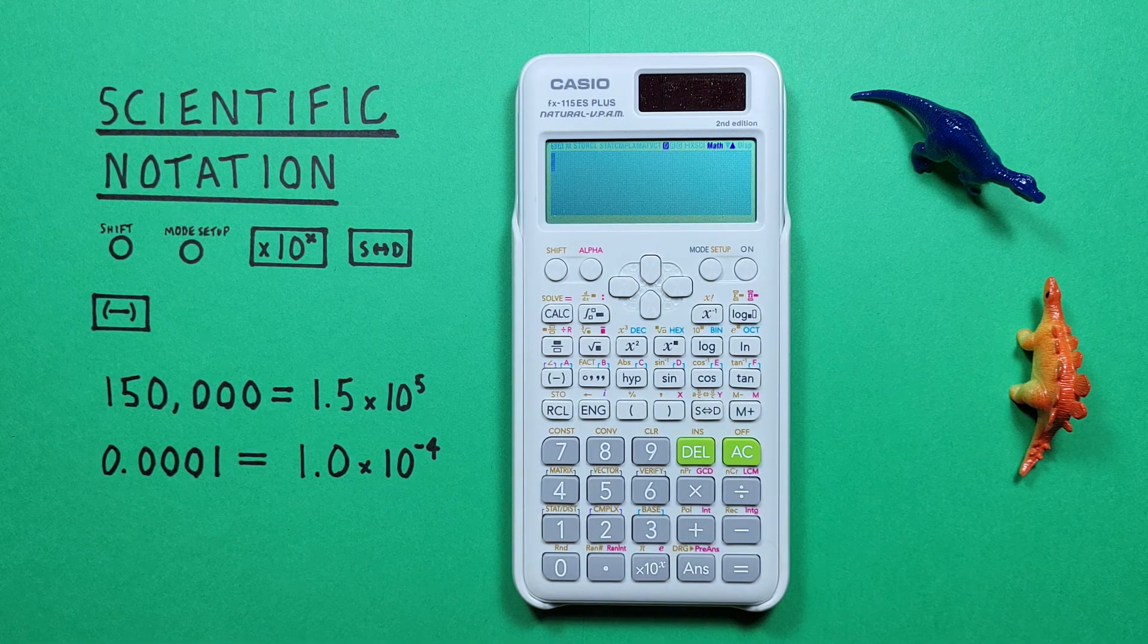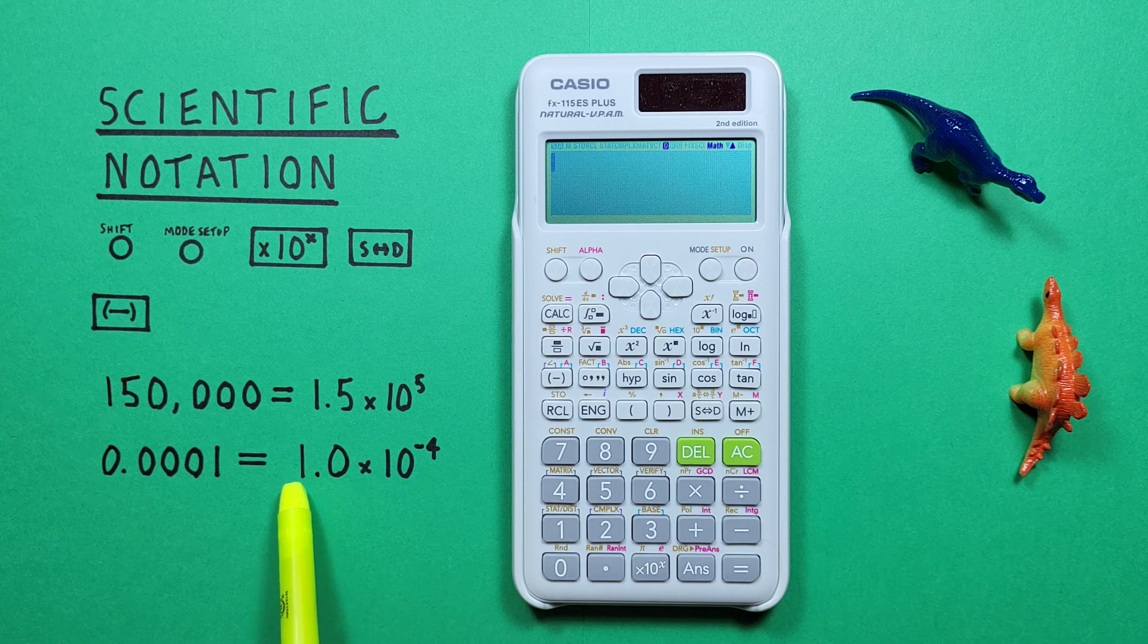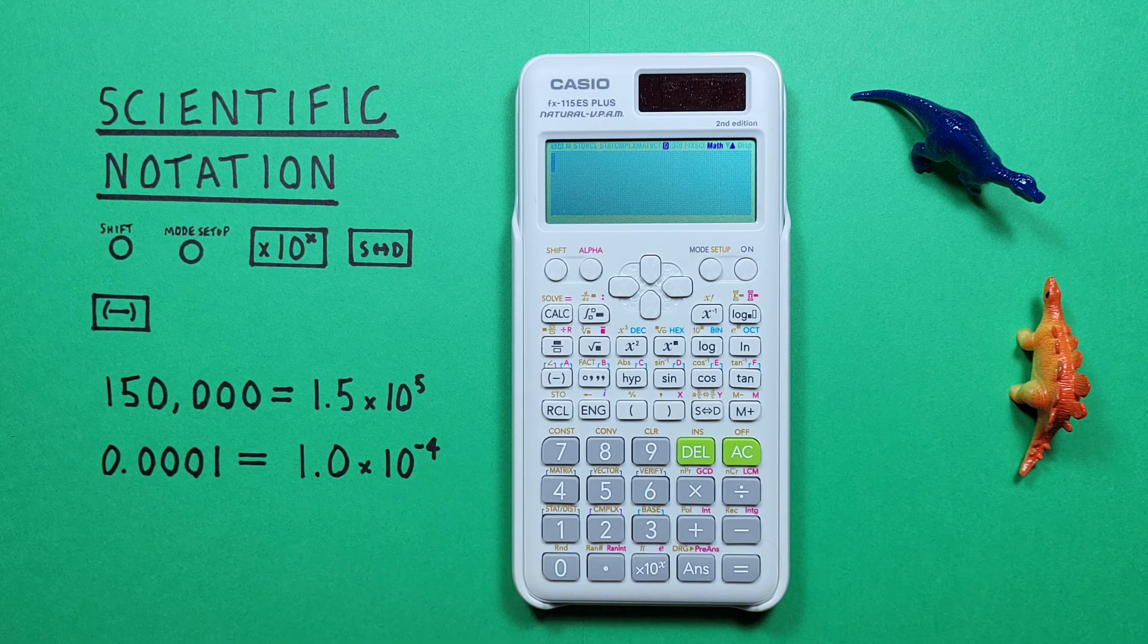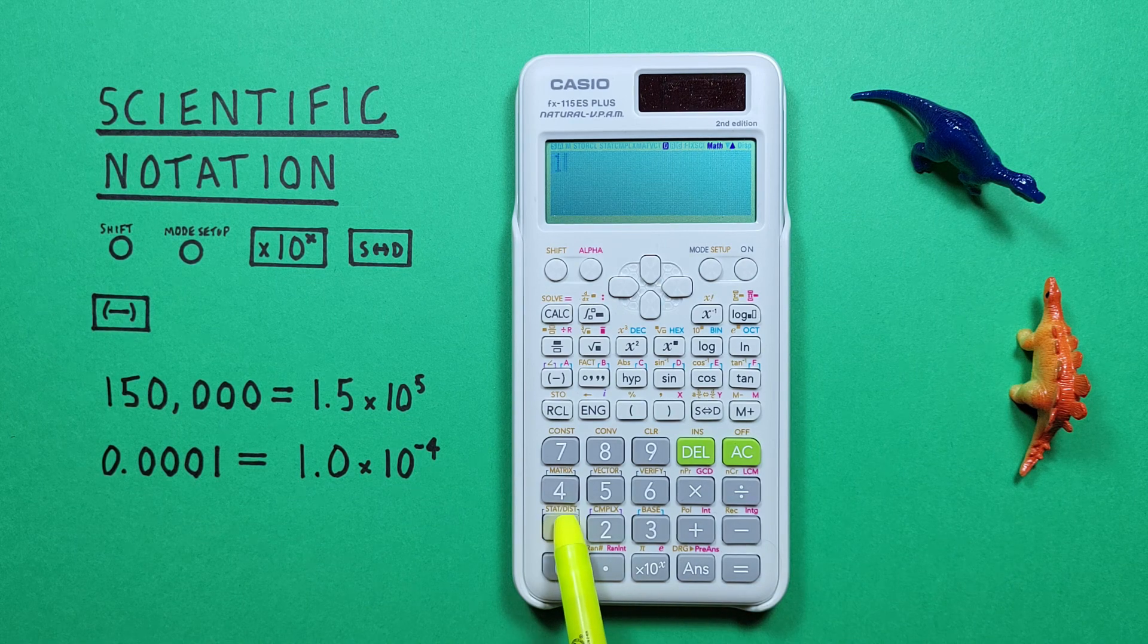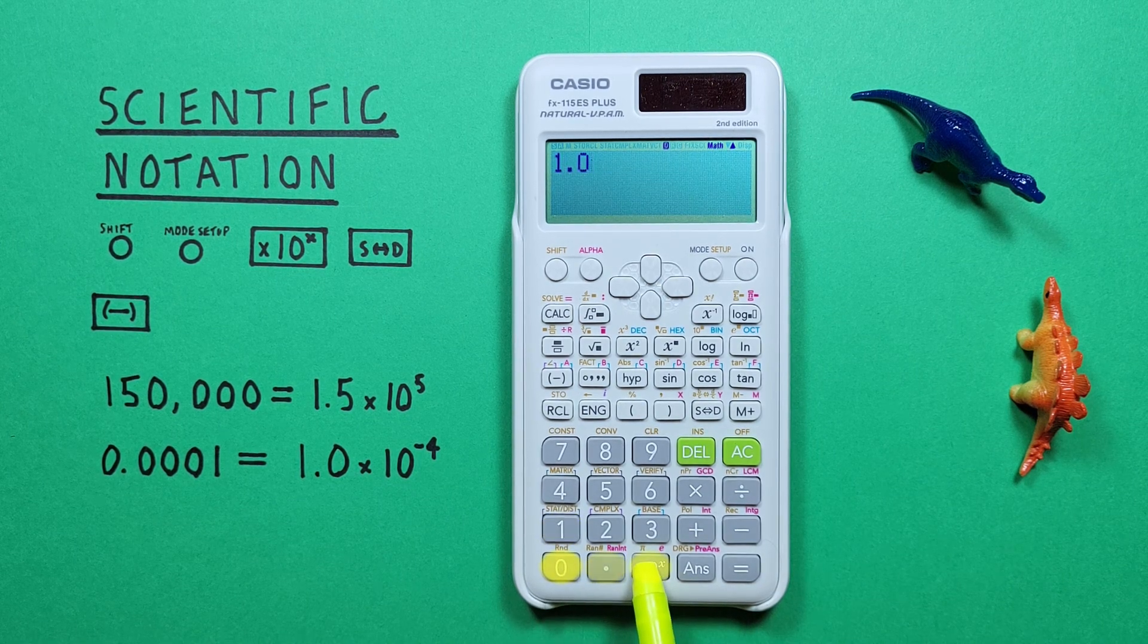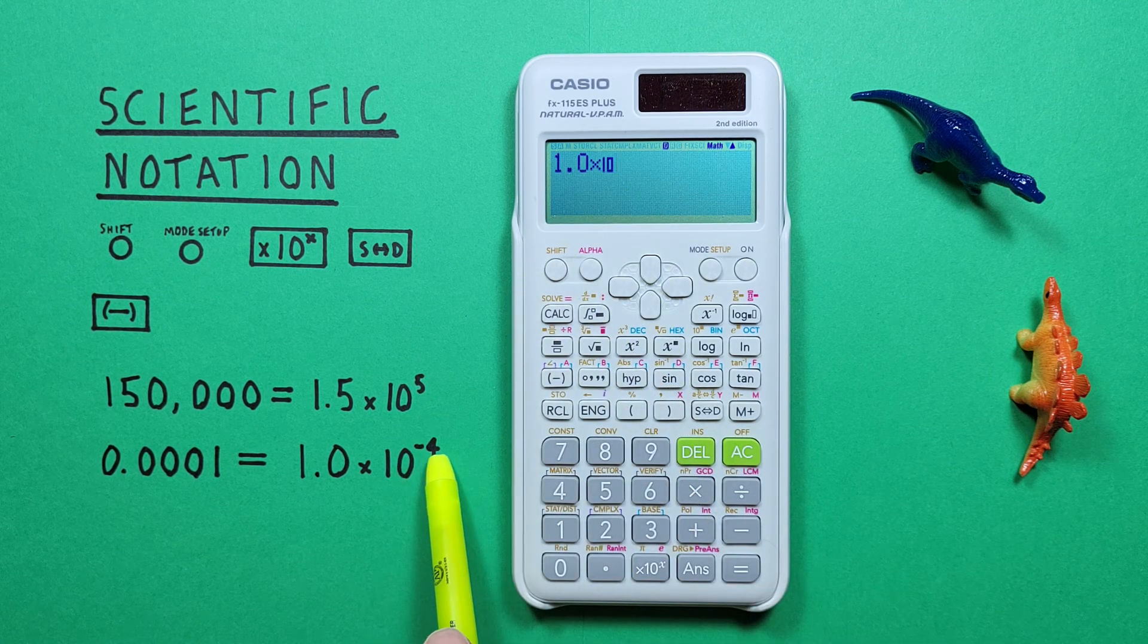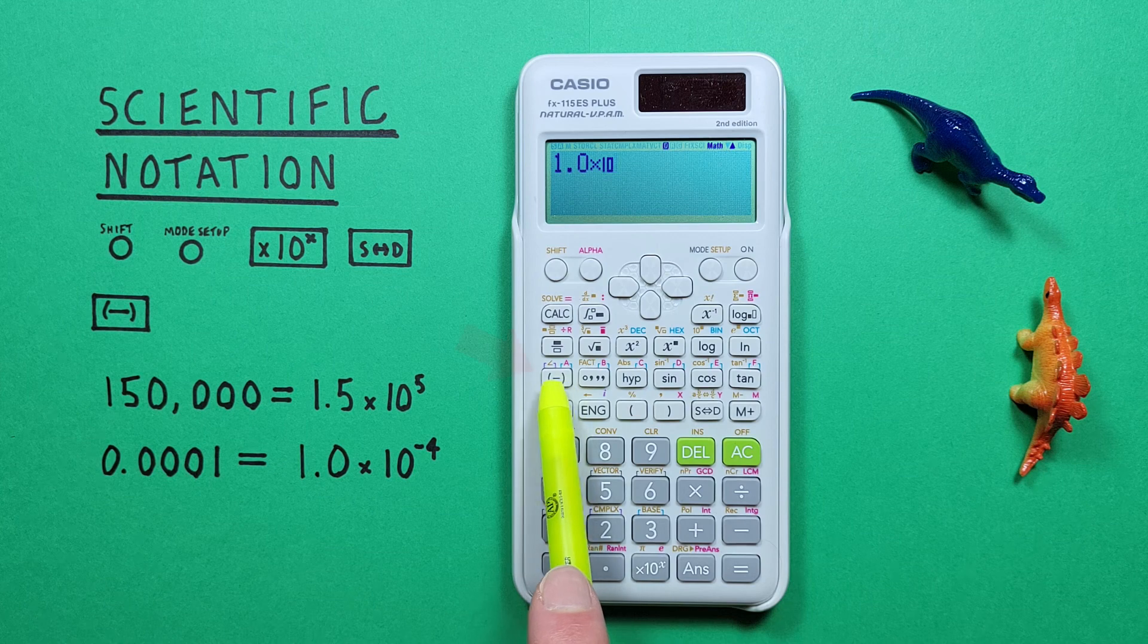Again, we can do this with very small numbers. So if we had 1.0 times 10 to the power of negative 4, we can go ahead and enter that as 1.0 times 10 to the x. And then we have our exponent,